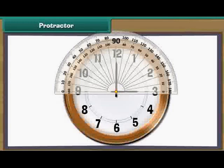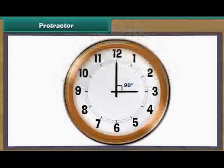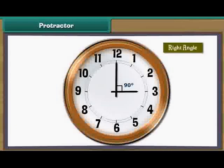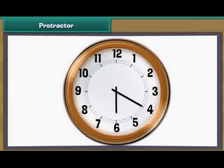This clock shows 20 past 6. The long hand of the clock is on 4 and the short hand is on 6. Place the protractor on the short hand of the clock. Read the inner marking of the protractor on which the long hand rests. It is 60 degrees. Therefore, the time 20 past 6 makes an acute angle.